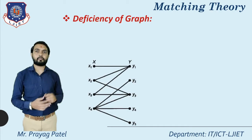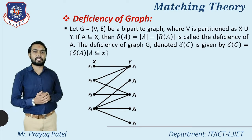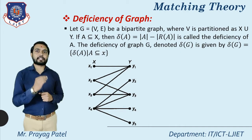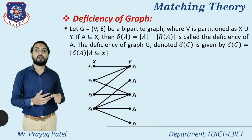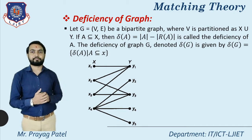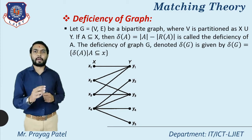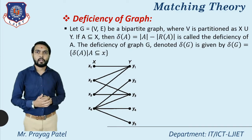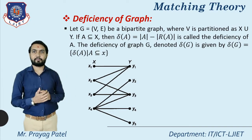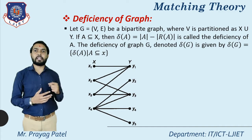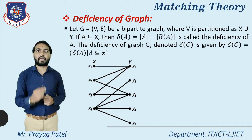Next definition is deficiency of a graph. Let G = (V, E) be a bipartite graph where V is partitioned as X union Y. If A is a subset or equal set of X, then δ(A) = |A| − |R(A)|, and it is called the deficiency of A. The deficiency of the graph G, denoted by δ(G), is given by the maximum δ(A) where A is a subset or equal to X.